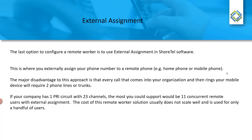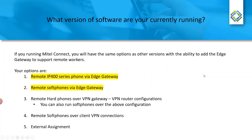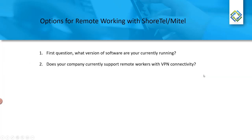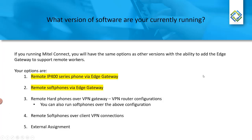To wrap up: for remote worker options, if you're on Mitel Connect, a virtual edge gateway can support both hard phones and soft phones. You can also do remote hard phones and soft phones over a branch tunnel VPN, remote soft phones over a VPN software client connection, and external assignment. Each option has its own trade-offs in terms of scalability and IT overhead.